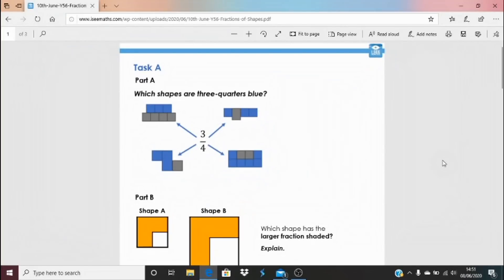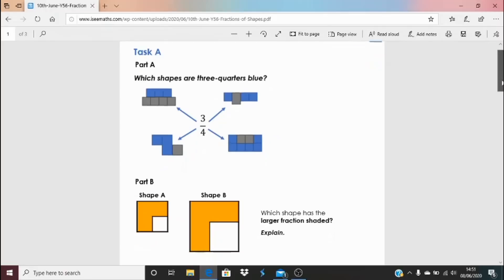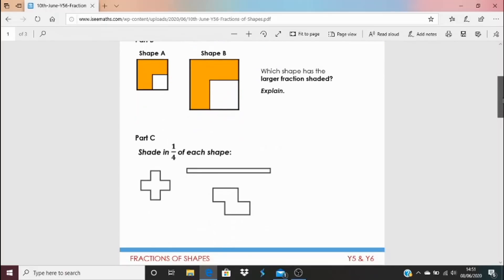So to find your tasks, click on that blue link underneath the video. We've got a task A and a task B, which are completely different from one another. This is task A. First of all, which of those shapes are 3 quarters blue? And then have a look there, which of these shapes has the larger fraction that's shaded, the larger fraction that's orange out of these two? And then have a go at these ones that shade a quarter of those shapes. I'd love to know which did you find easier, which did you find harder?